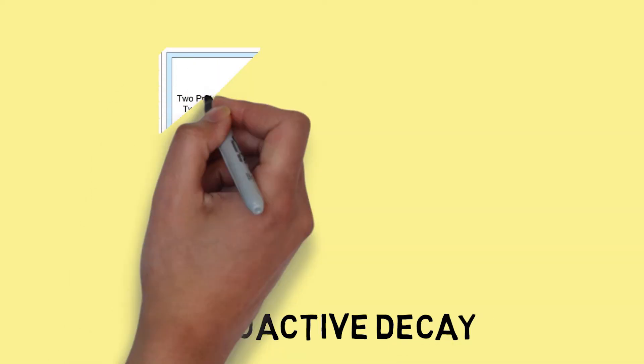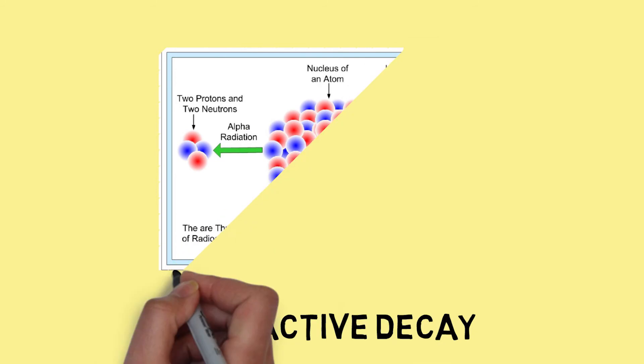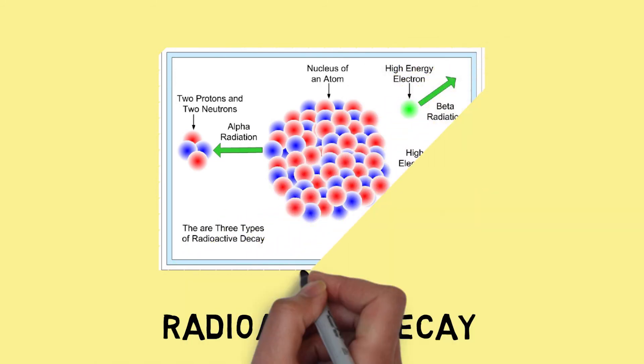Radioactive contamination is a hazard because the contents slowly undergo a process known as radioactive decay. In this process, the constitutive atoms slowly break down into more simple elements.